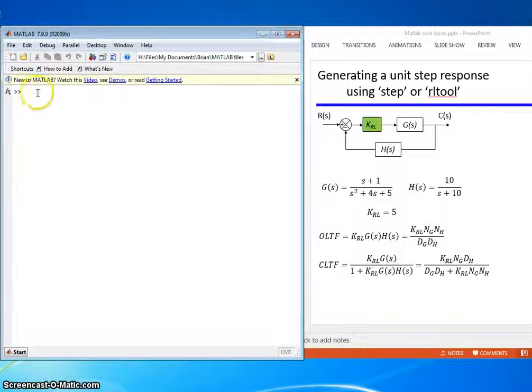So let's build our system. G equals Tf, 1, [1, 4, 5]. That's G.